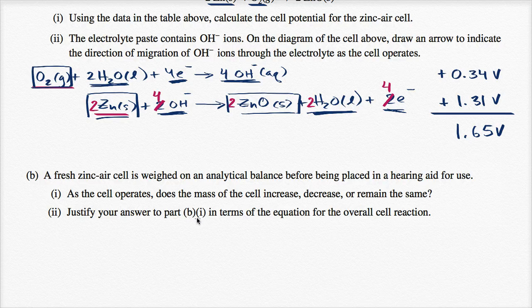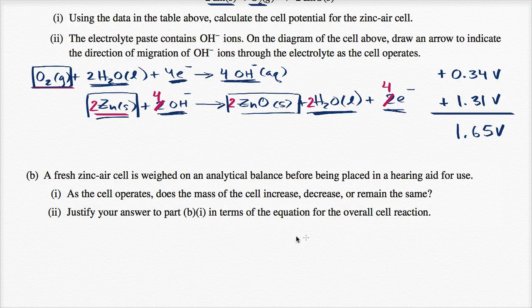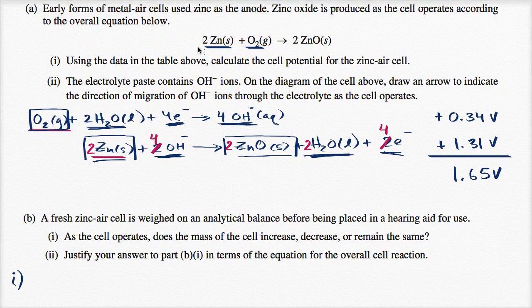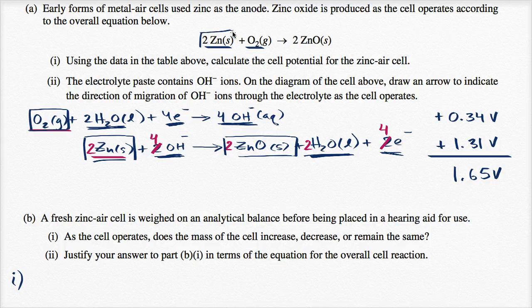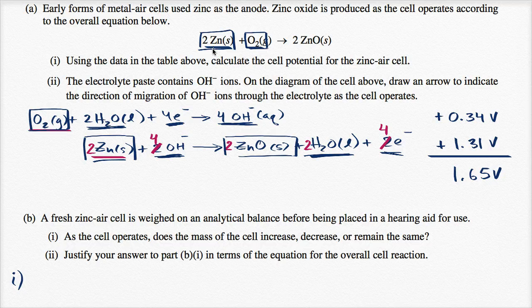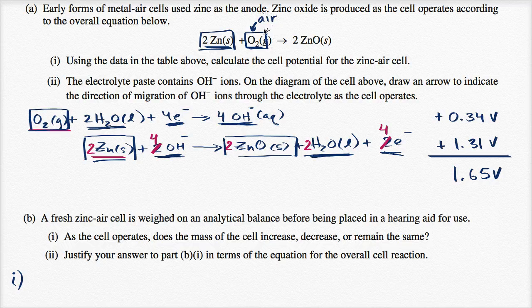Justify your answer to part B1 in terms of the equation for the overall cell reaction. So let's just think about it. Does the mass of the cell increase, decrease, or remain the same? Let's go to our original reaction over here. This is our total reaction. The zinc is part of the metal air cell, so that would contribute to its weight beforehand. And then it reacts with the oxygen. Well, where is this oxygen coming from? Well, this oxygen is coming from the air, and essentially it gets incorporated into the zinc. So before, the oxygen is in the air,